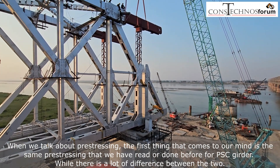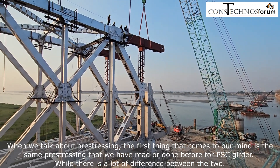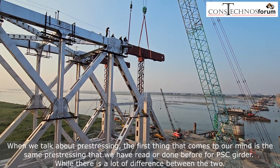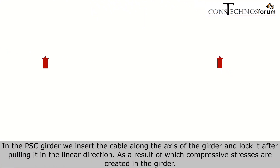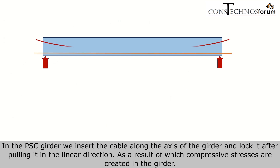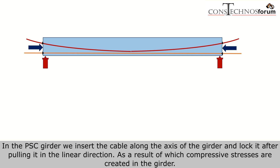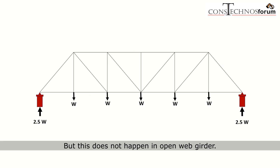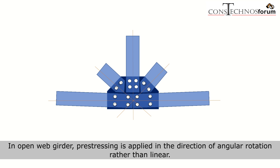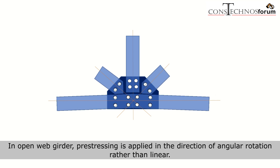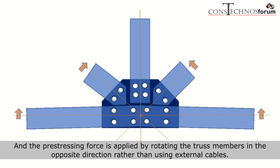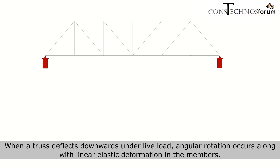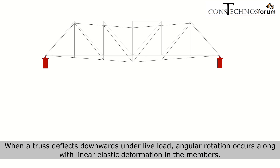When we talk about pre-stressing, the first thing that comes to mind is the same pre-stressing we have read about for PSC girders, while there is a lot of difference between the two. In a PSC girder, we insert the cable along the axis of the girder and lock it after pulling it in the linear direction, as a result of which compressive stresses are created in the girder. But this does not happen in open web girders. In open web girders, pre-stressing is applied in the direction of angular rotation rather than linear. When a truss deflects downwards under the live load, angular rotation occurs along with linear elastic deformation in the member.